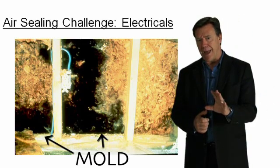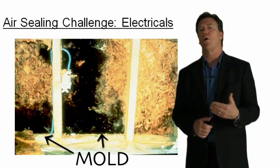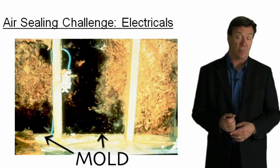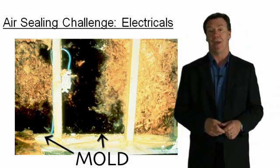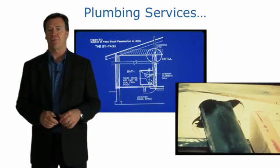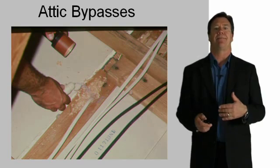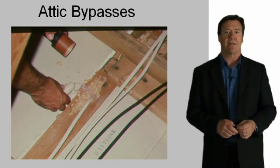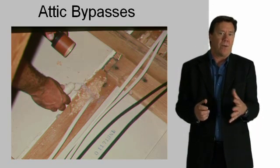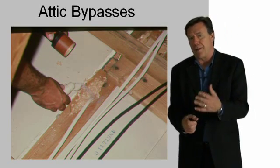When we control air exfiltration and infiltration, we go a long way toward reducing the potential for mold growth and moisture problems in walls, in addition to making our homes more energy efficient. Plumbing penetrations need to be sealed. A smoke device can be used to determine whether the structure is under negative or positive pressure, and more importantly, where the big leaks are.